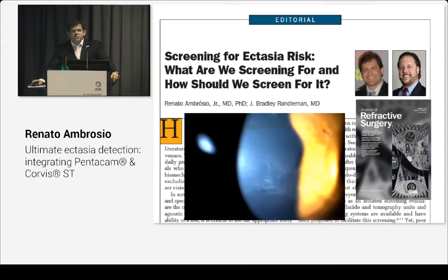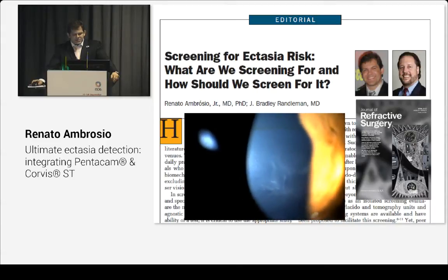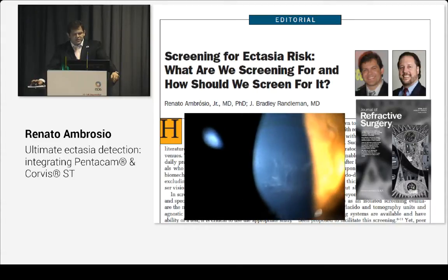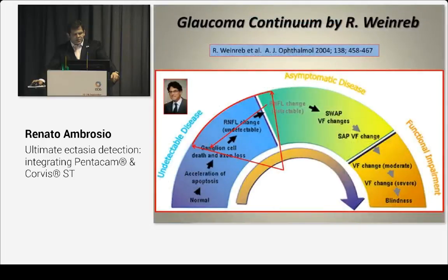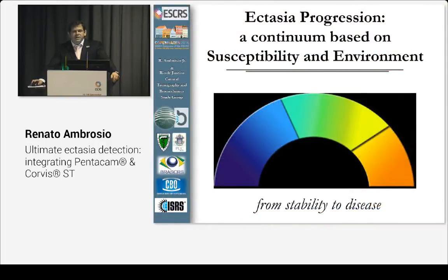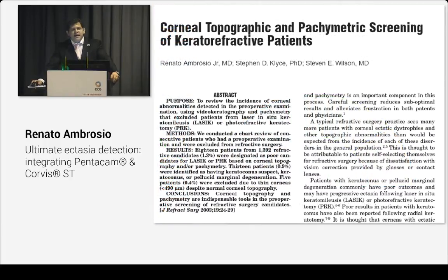The ectasia you're trying to screen is not advanced disease that you can detect from the slit lamp. Like glaucoma, it is a continuum — from normality to blindness — and in ectasia you have from stability to the disease. You have to assess susceptibility. Susceptibility will be detected by topography, and yet a lot of people are still using topography as a surrogate for biomechanical measurements. It's a very limited and literally superficial surrogate.